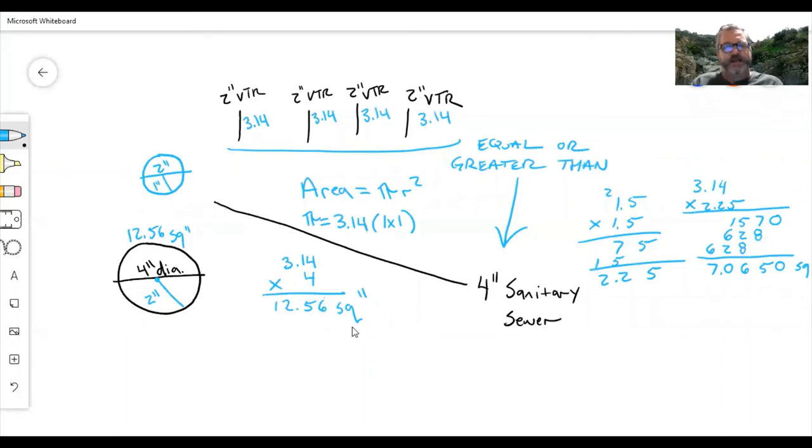If it's a four-inch line coming out of the building, then you take that area, which is 12.56 square inches, and you make sure that the areas for the vent are going to be equal to that or greater than. In this example, it was four two-inch vents, which equaled out to 12.56, which was perfect. So that is pretty much it. I again hope it helped, and I'll talk to you guys later.